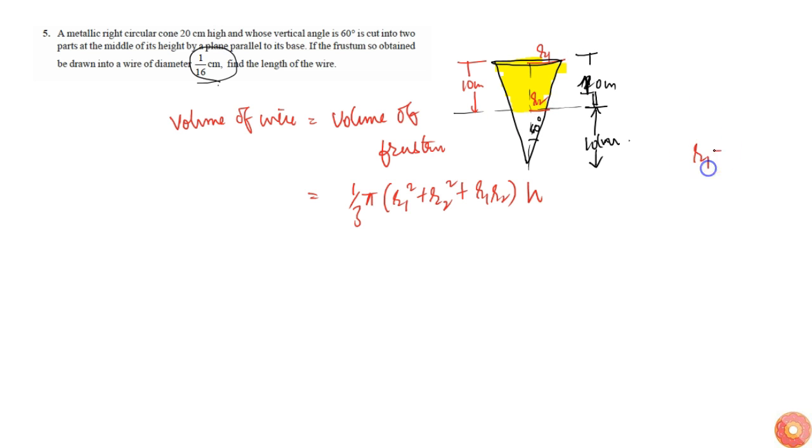This radius is r1 and this is r2. We know that r1 is equal to 20 tan(60°), because tan(60°) equals opposite by adjacent, that is r1 by 20. So r1 equals 20 tan(60°) and r2 equals 10 tan(60°).